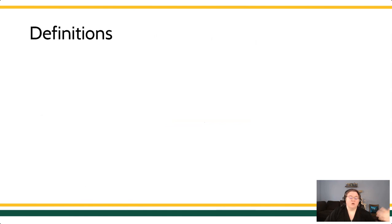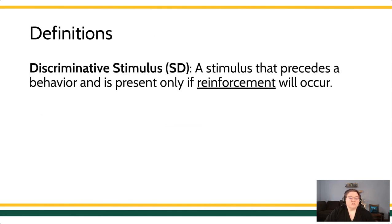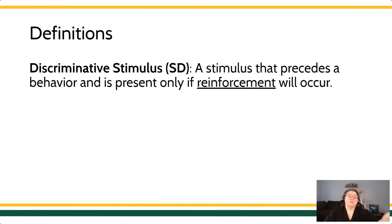A couple more definitions you'll want to know moving forward. We talk about discriminative stimuli. A discriminative stimulus, or SD, is a stimulus that's present when and only when reinforcement will occur. It tells or predicts or communicates to the learner: if you emit the response under these circumstances, then you are likely to contact reinforcement. A discriminative stimulus develops through experience — either through direct experience, having been in that environment before and contacted that reinforcer, or through rule-governed behavior, where you communicate to the learner that under these circumstances, if you emit the response, you'll contact reinforcement.